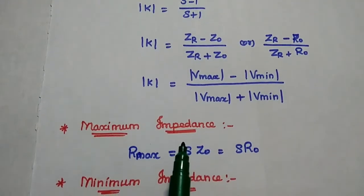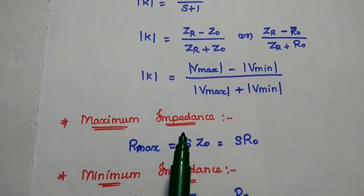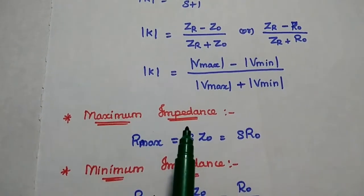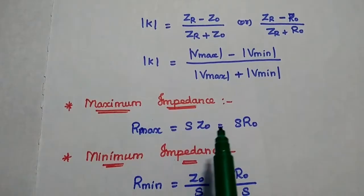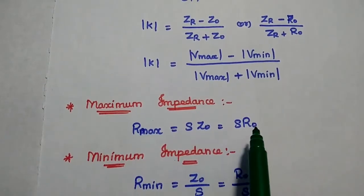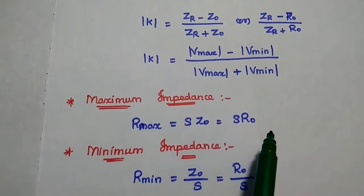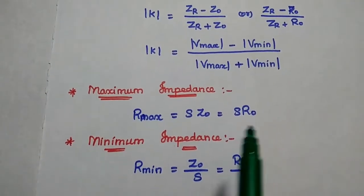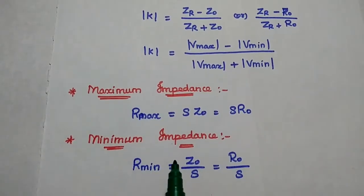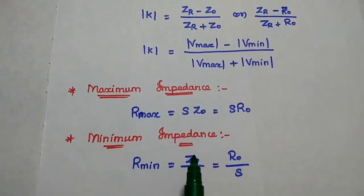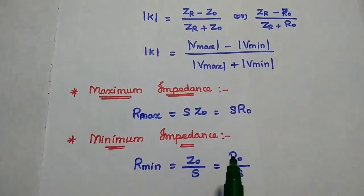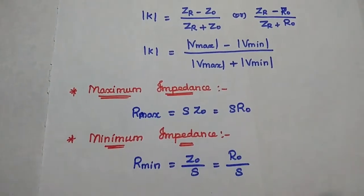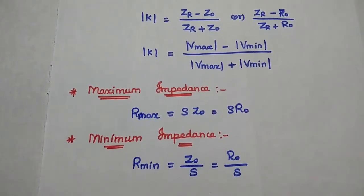The maximum impedance of the transmission line is given as Rmax equal to S into Z0, which is equal to S into R0. Similarly, the minimum impedance of the transmission line is Rmin equal to Z0 by S, or R0 by S. These are the formulas.